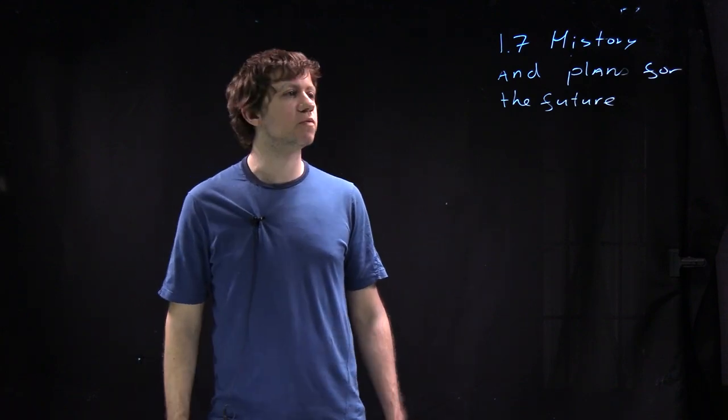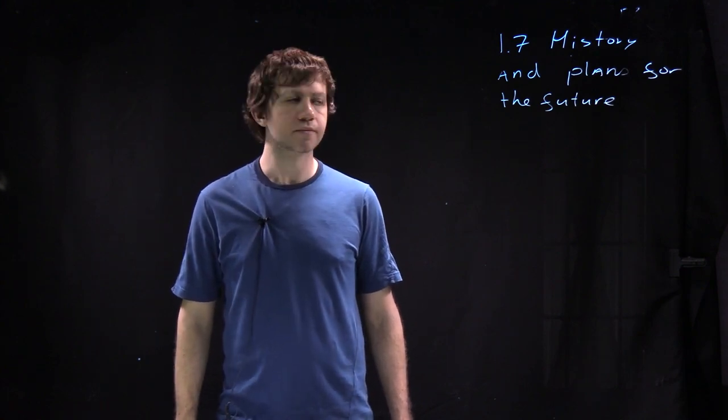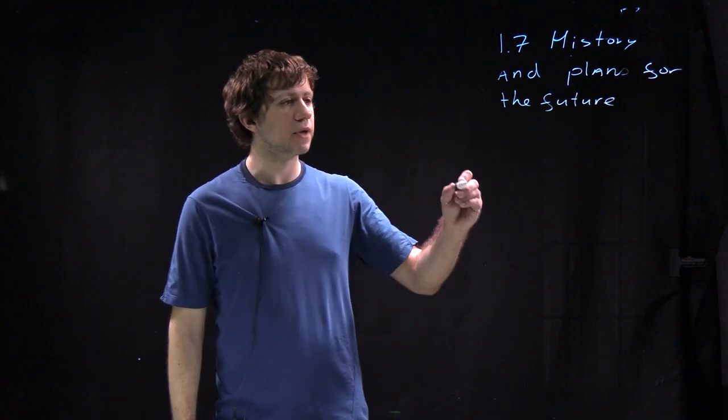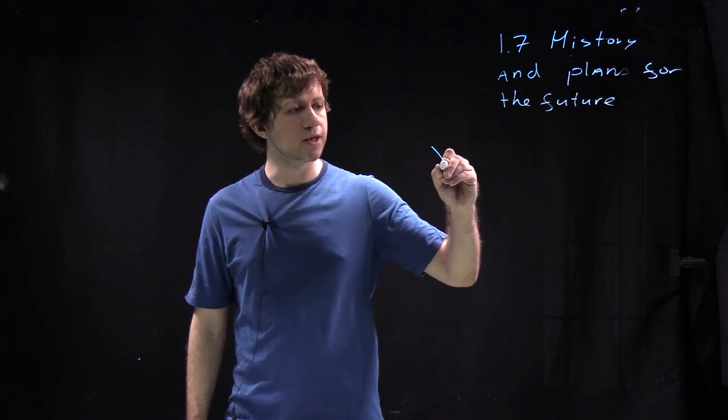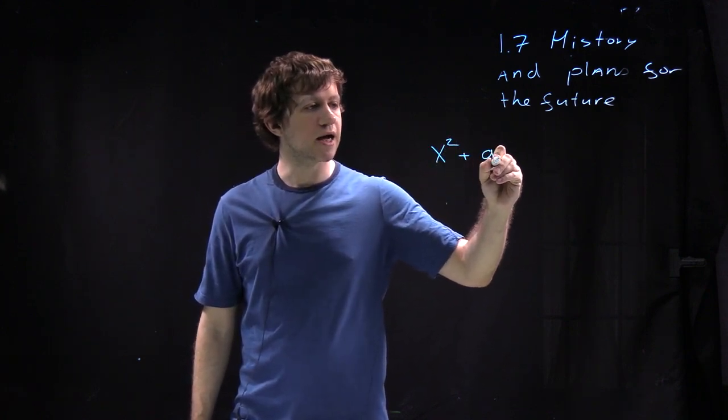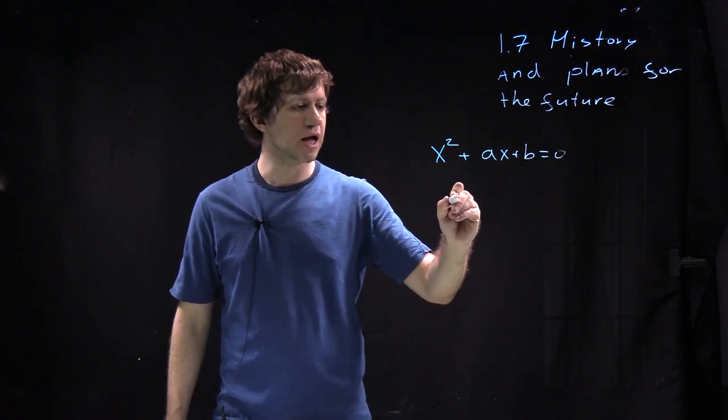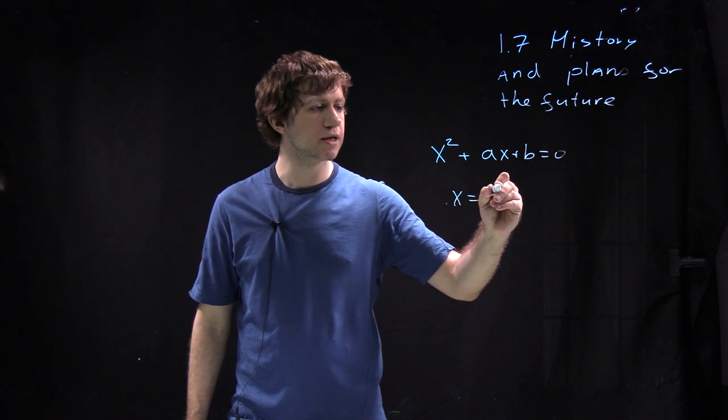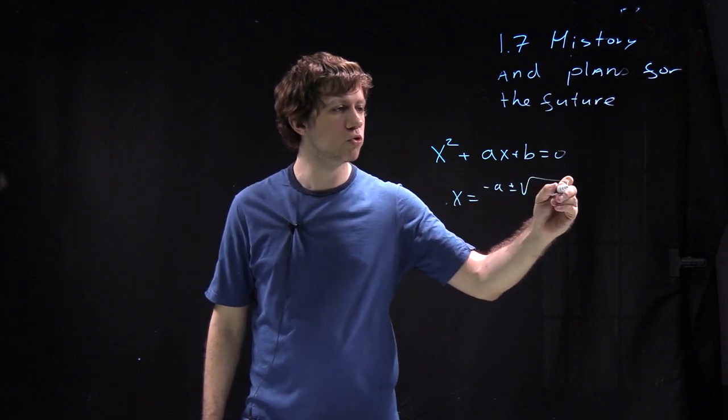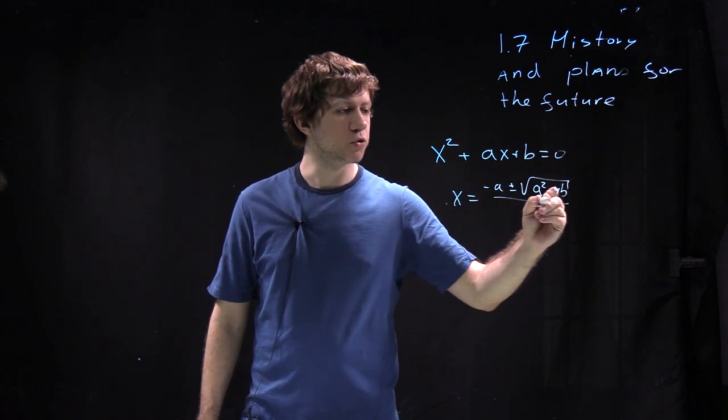So there is a problem which seems to be completely unrelated to group theory. So you know very well that if you have an equation x squared plus ax plus b equal to 0, then there is a formula. So x equals minus a plus minus square root of a squared minus 4b over 2.